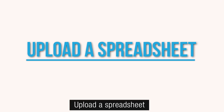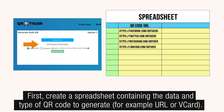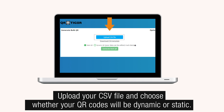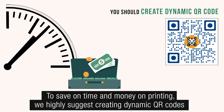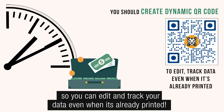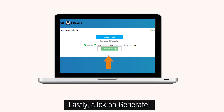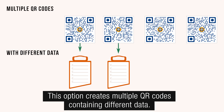To upload a spreadsheet: first, create a spreadsheet containing the data and type of QR code to generate — for example, URL or vCard. Upload your CSV file and choose whether your QR codes will be dynamic or static. To save on time and money on printing, we highly suggest creating dynamic QR codes so you can edit and track your data even when it's already printed. Lastly, click on Generate. This option creates multiple QR codes containing different data.